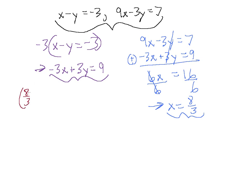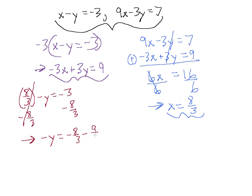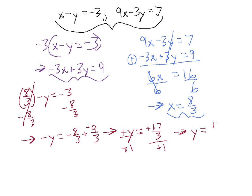We have x, which is 8 over 3, minus y equals minus 3. Subtracting 8 over 3 from both sides gives minus y equals minus 8 over 3 minus 3. Writing 3 as 9 over 3, we get minus y equals minus 8 over 3 minus 9 over 3, which is minus 17 over 3. Dividing both sides by minus 1 flips the signs, giving y equals positive 17 over 3.